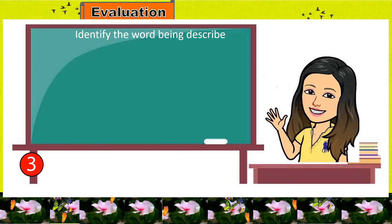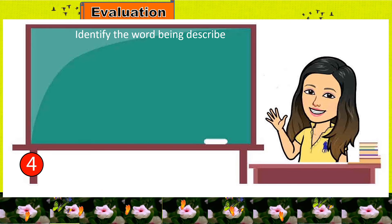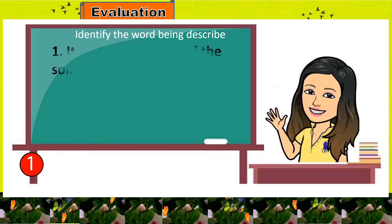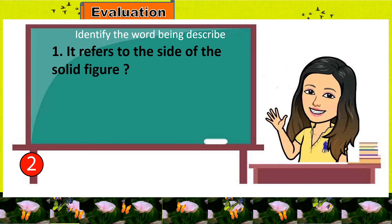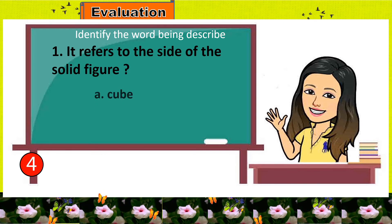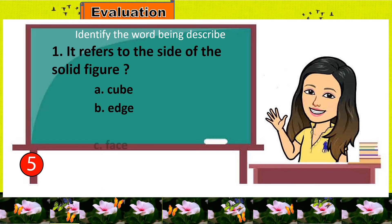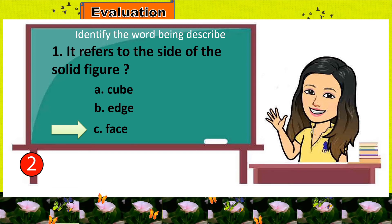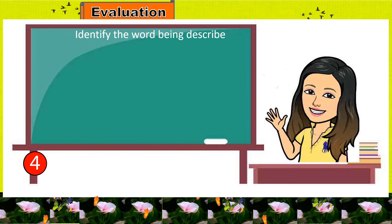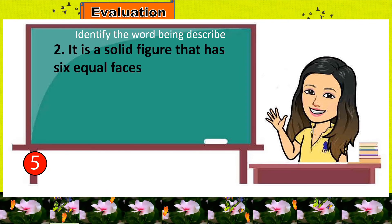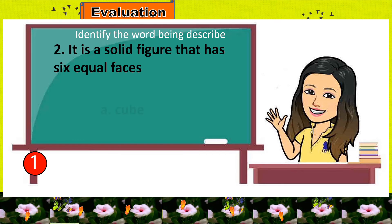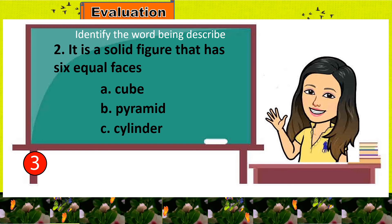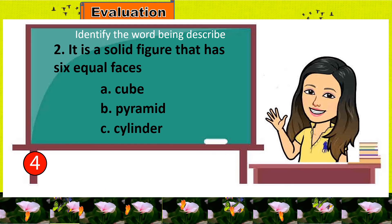Now, if you really understand our lesson, can you identify the word being described? Give me the letter of the correct answer. Number 1: It refers to the side of a solid figure. A. Cube, B. Edge, C. Face. Good — the correct answer is letter C. Number 2: It is a solid figure that has 6 equal faces. A. Cube, B. Pyramid, C. Cylinder. The correct answer is letter A.